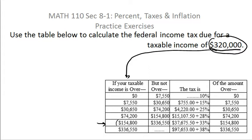In fact, you get in the range of $320,000 right here. That's the low value and that's the high value. So this $320,000 is between $154,800 and $336,550. So you've got to take that taxable income and find the row that corresponds to the range containing it.